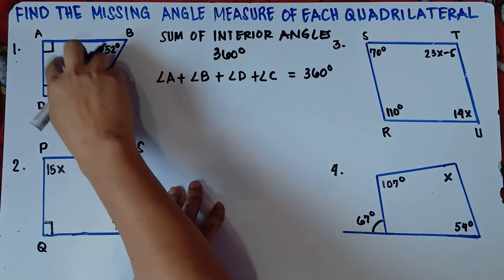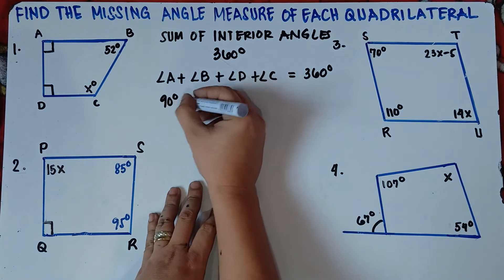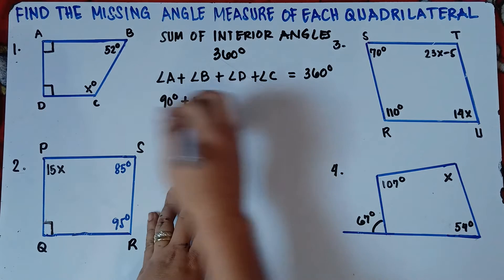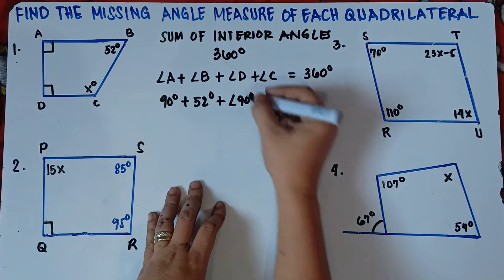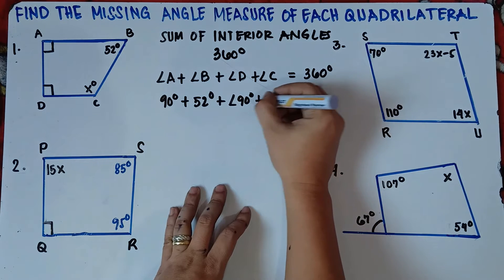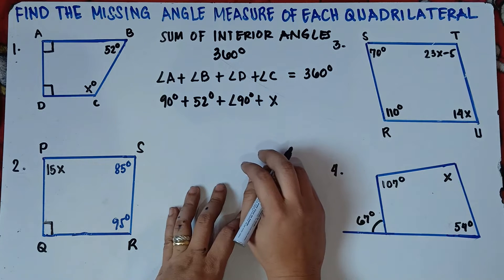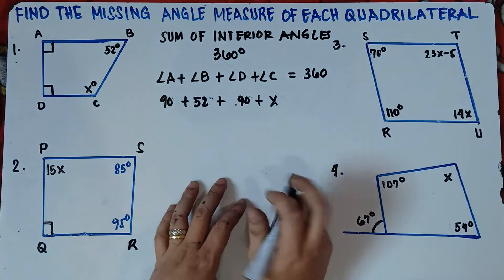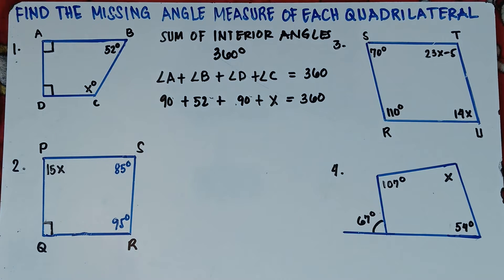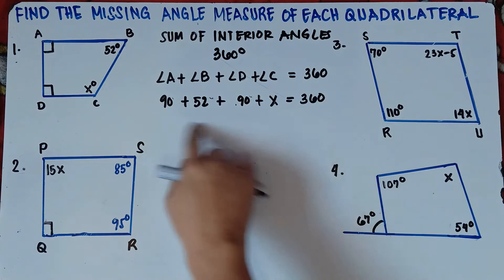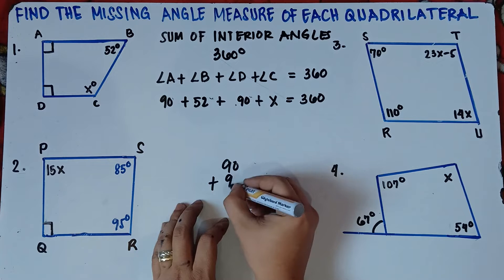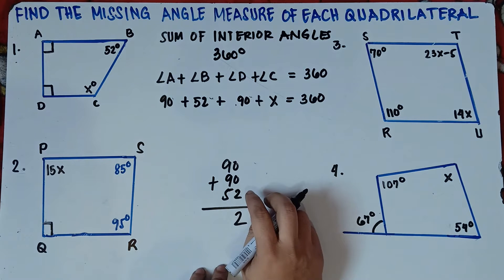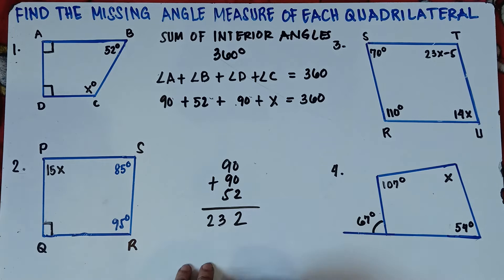So we have angle A, that is 90. We have a given right angle marking, 90 degrees, plus angle B, that's 52 degrees. We don't have angle C, it's X. For angle D, we have 90 degrees. Let's ignore degrees for now so we're not confused. So equals 360. Add this: 90 plus 52 plus 90. Combine like terms: 90 plus 90 is 180, plus 52. So 232.